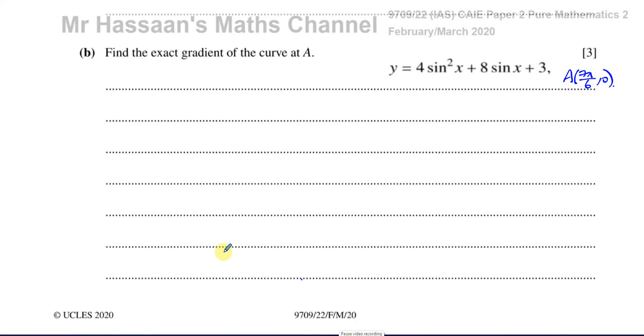Okay, welcome back. This is Mr. Hassan's Maths Channel, and now I'm answering question number 6B from the February-March 2020 paper 2, Pure Mathematics 2 paper from Cambridge 9709. This question, part B, is to do with differentiation of trig functions. Part A was to do with solving trig equations. So I'm saving part B in a separate video so I can save it in the playlist to do with differentiation.